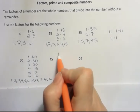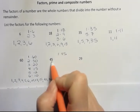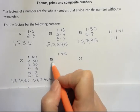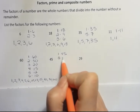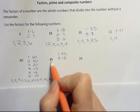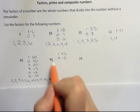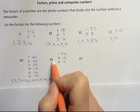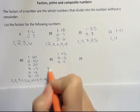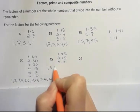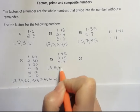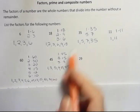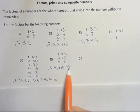What about 45? 1 times 45. 2 doesn't go. It's not even. 3, yeah, 3 goes 15 times. 4 doesn't go. No even numbers are going to go into an odd number. 5 times 9. 6, no. 7, no. And 7 times 7 is 49. Our numbers here are 1, 3, 5, 9, 15, and 45. Notice I'm always starting with 1. I'm always ending with the number itself.